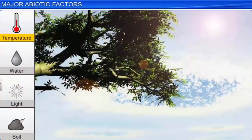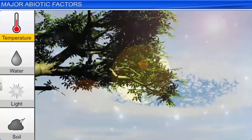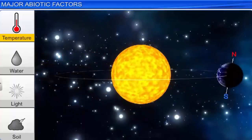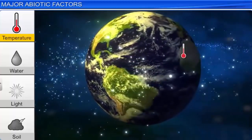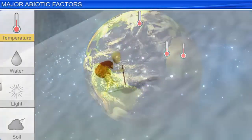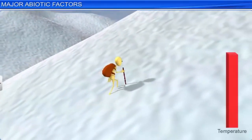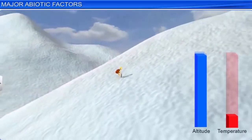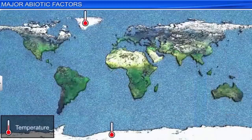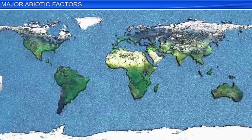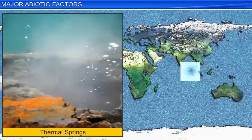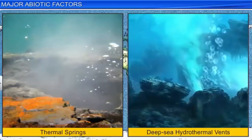Temperature is one of the most important abiotic factors that influence the life of organisms. On earth, the average temperature on land varies seasonally. As you move away from the equator towards the poles, you will notice a progressive decrease in temperature. Similarly, as you climb mountains, temperature decreases with an increase in altitude. On our planet, temperature ranges from sub-zero levels in the polar areas and high altitudes to more than 50 degrees centigrade in tropical deserts in summer. There are some unique habitats, such as thermal springs and deep-sea hydrothermal vents, where the average temperature exceeds 100 degrees centigrade.